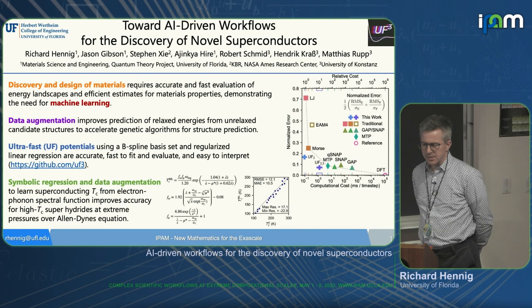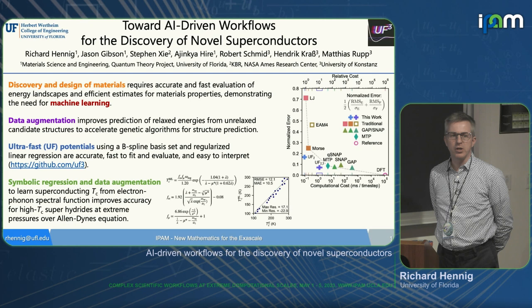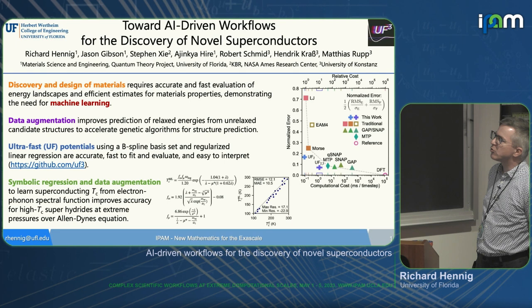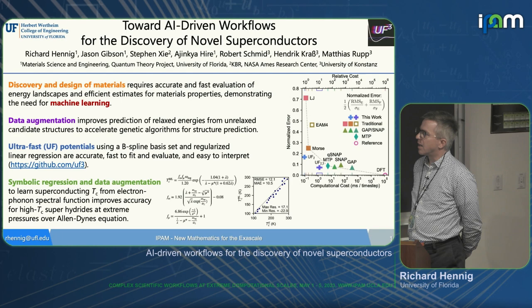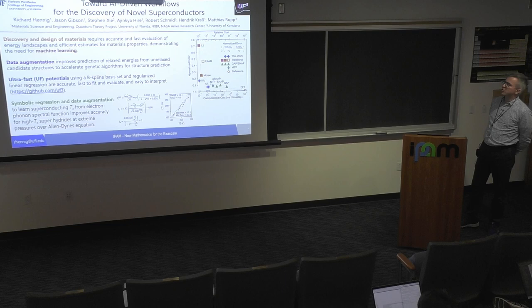I'm going to tell you about some of our workflow components for the discovery of novel superconductors. As we've already heard many times, if you want to design and discover new materials, machine learning and artificial intelligence is a nice way of accelerating those efforts. I'm going to talk about three projects: the first is data augmentation, the second is ultra-fast potentials. For data augmentation, we'll show a very cheap augmentation, essentially for free, to predict the relaxed energy of unrelaxed structures. For ultra-fast potentials, that's a machine learning potential method which is probably competitive in speed with ACE and has surprisingly good accuracy.